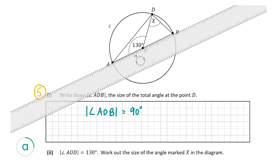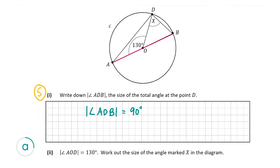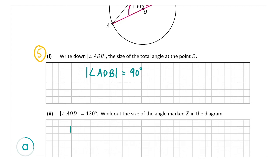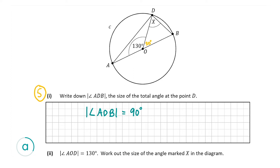We know AB is a straight line so this total angle should be 180 degrees. I'm going to call the remaining angle y, so 130 plus y equals 180 degrees since there are 180 degrees in a straight line. Taking away 130 from both sides gives y equals 50 degrees.